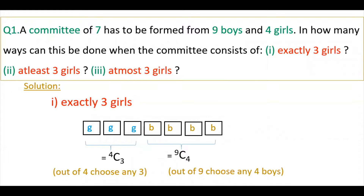Hello everyone. Today I am going to tell how to solve this problem. A committee of 7 has to be formed from 9 boys and 4 girls. In how many ways can this be done? The first condition is exactly 3 girls, the second is at least 3 girls, and the third is at most 3 girls.